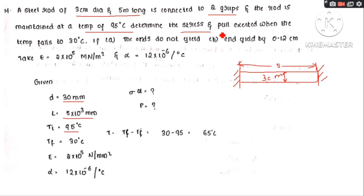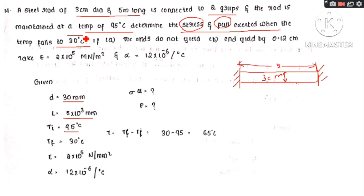Determine the stress and pull when the temperature falls to 30 degrees Celsius. We will find out the thermal stress and load. Initial temperature Ti is 95 degrees Celsius, final temperature Tf is 30 degrees Celsius. The fall in temperature is Tf minus Ti equals 65 degrees Celsius. We need to find thermal stress sigma and load P.